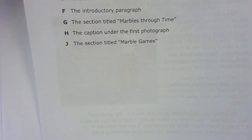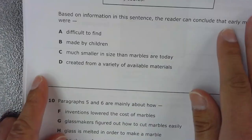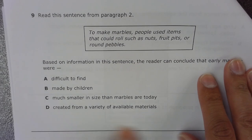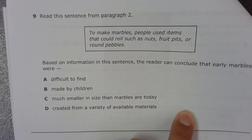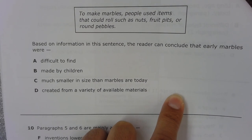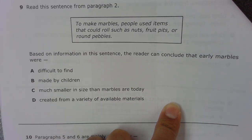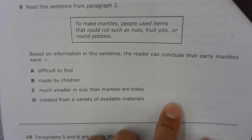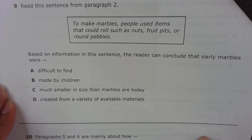Number 9. Read this sentence from paragraph 2: To make marbles, people used items that could roll such as nuts, fruit pits, or round pebbles. Based on the information in this sentence, the reader can conclude that early marbles were A. Difficult to find. B. Made by children. C. Much smaller in size than marbles are today. D. Created from a variety of available materials.